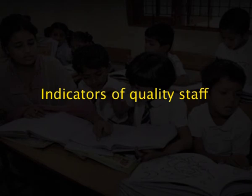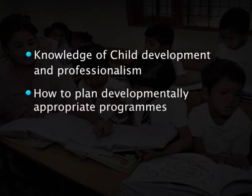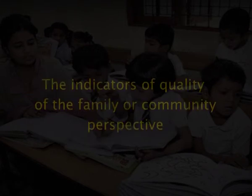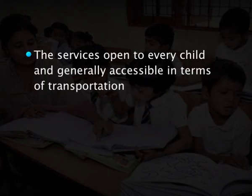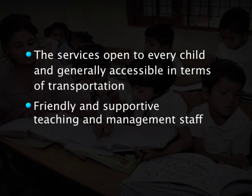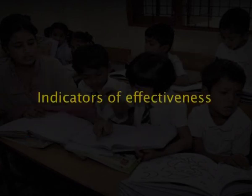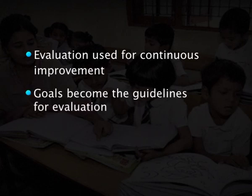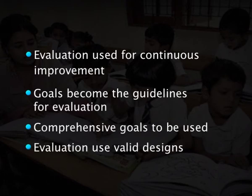Indicators of quality staff include knowledge of child development and professionalism, how to plan developmentally appropriate programs, and a positive, appreciative attitude towards children. Indicators of quality from the family or community perspective include services open to every child and generally accessible in terms of transportation, friendly and supportive teaching and management staff, and staff that are objective and non-judgmental. Indicators of effectiveness include evaluation used for continuous improvement, goals that become the guidelines for evaluation, comprehensive goals, and evaluation using valid designs.